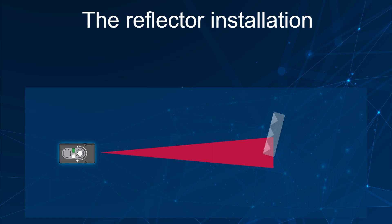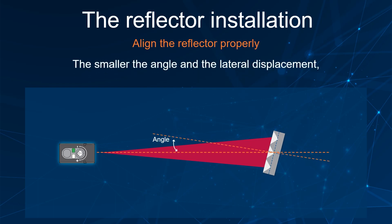The reflector should be installed and aligned properly for best detection performance. It should be installed in front of the sensor regarding the lateral displacement with an acceptable angle. The smaller the angle and the lateral displacement, the higher the sensing distance and the sensing range.